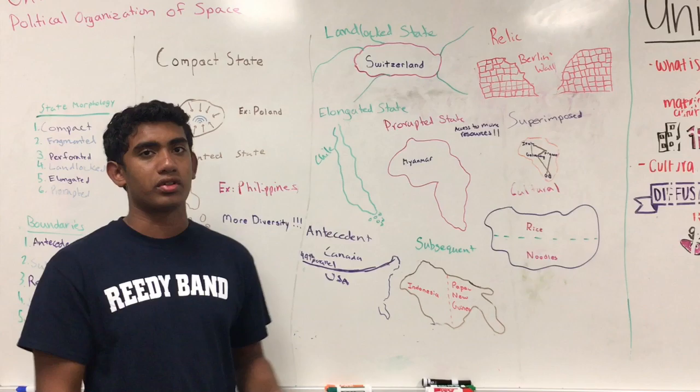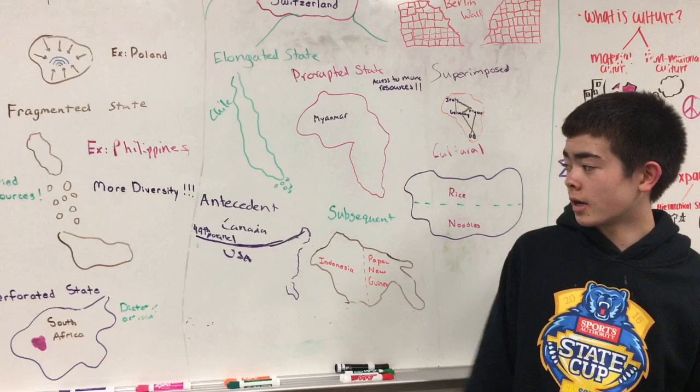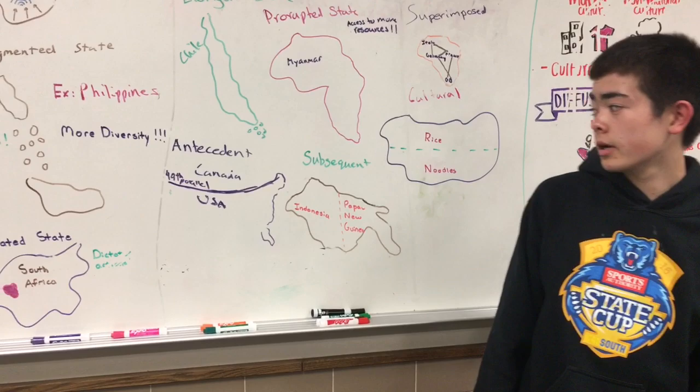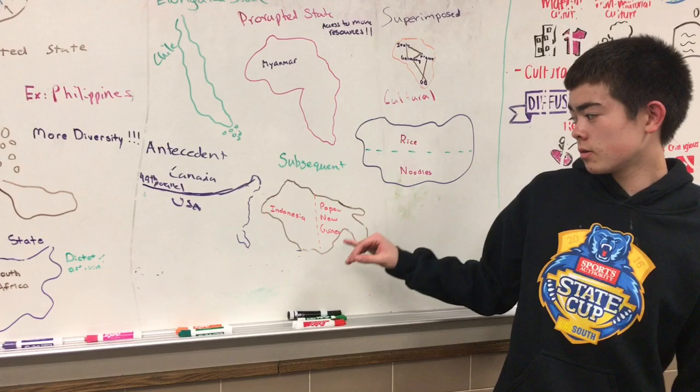We're now going to move on to boundaries. An antecedent boundary is a boundary that was drawn before major populations moved there — an example would be the 49th parallel between Canada and the U.S. A subsequent boundary is a boundary that's drawn at the cultural landscape. Here in Indonesia and Papua New Guinea, this was a cultural landscape, so they drew a boundary there.